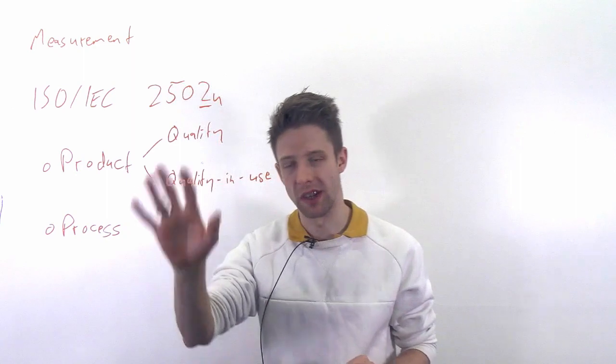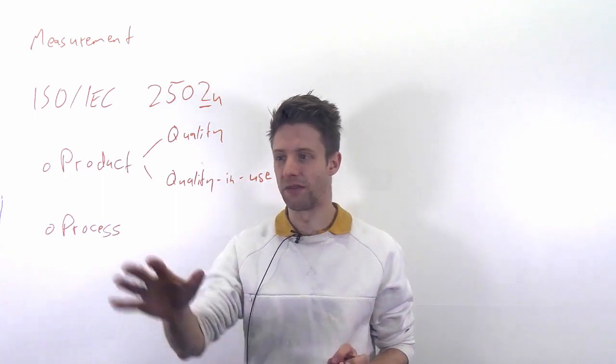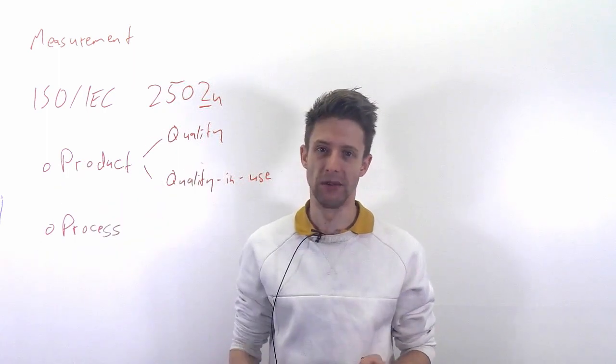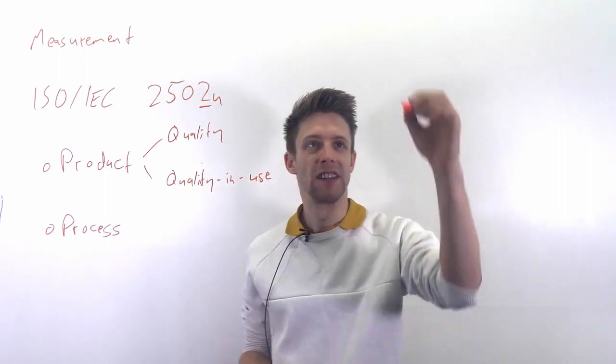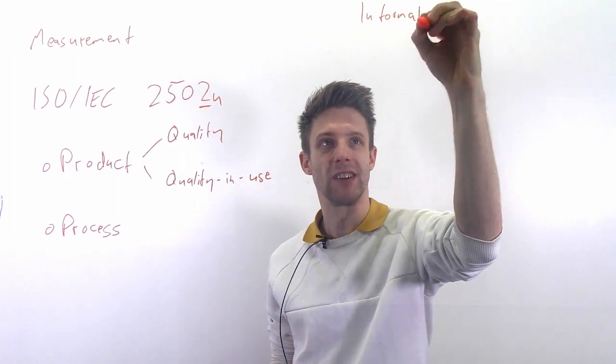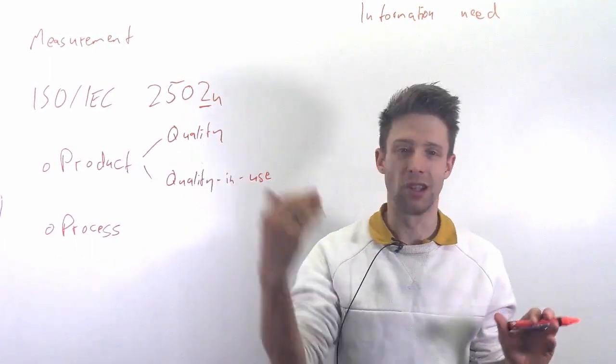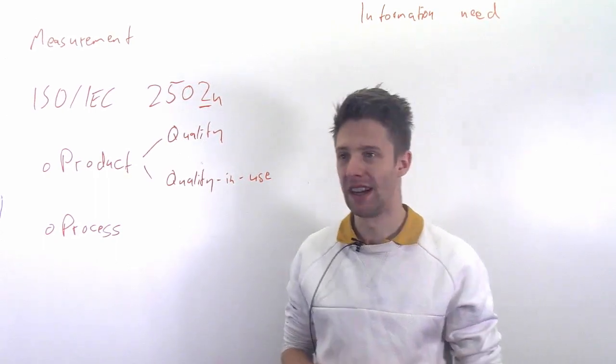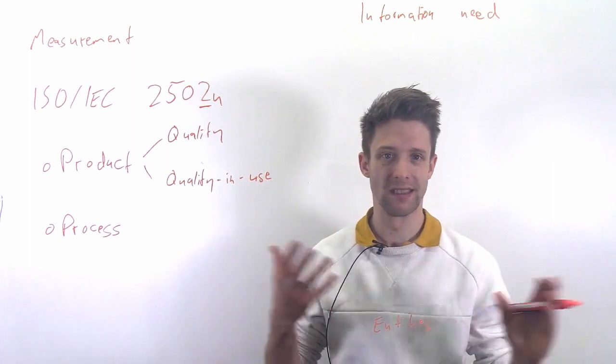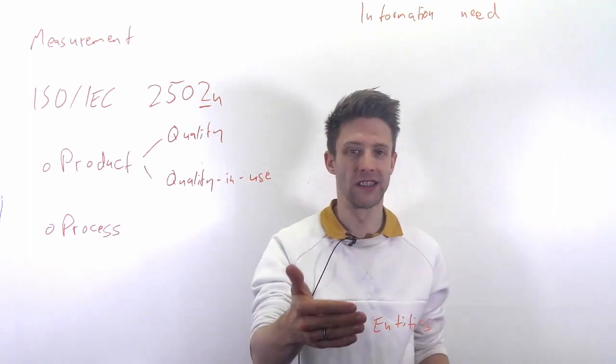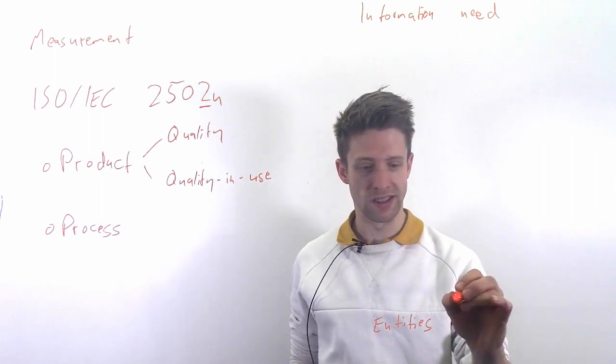So there should be a relationship here, and if we improve the process we hopefully also improve the product or at least the speed or the cost at which we develop this. Now this standard family proposes some things you can measure. There are some examples also on the slides, but I will not cover that in that much depth. I will go shortly into how the standard looks at measurement generally, how it breaks it down. And the important thing to notice here is that what you want to have, what you want to get answered, is some kind of information. You as a stakeholder, as for example a scrum master, you have an information need.